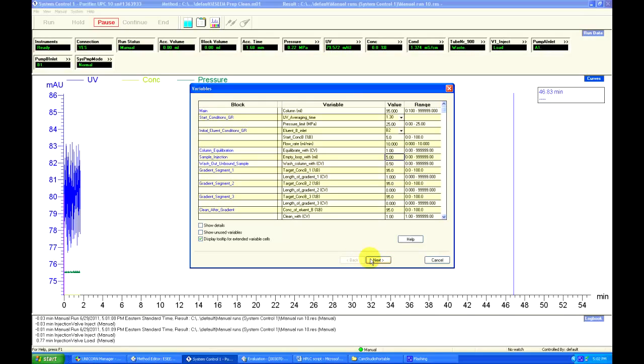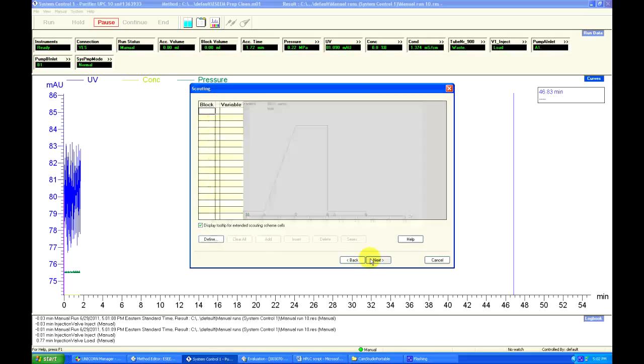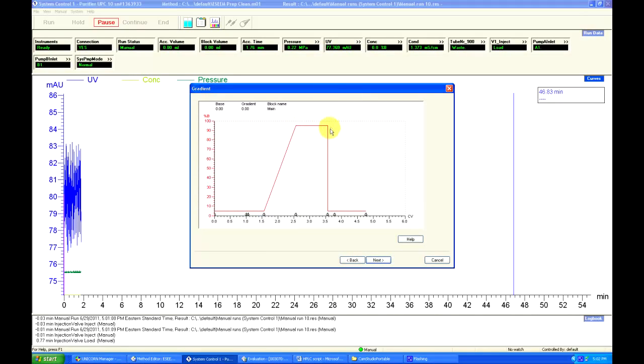Clicking Next two more times shows us the Gradient window. This simply displays what sort of gradient the selected method runs, with %SolventB on the y-axis. In this case, a linearly increasing gradient is used, but other gradients can be created with different slopes of increasing solventB to take advantage of a known elution time of a specific peak.